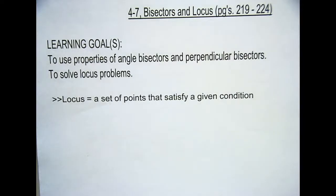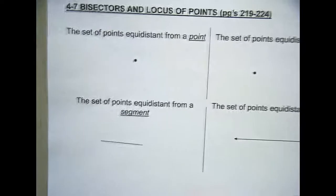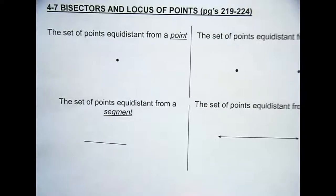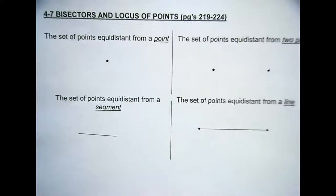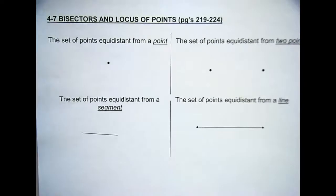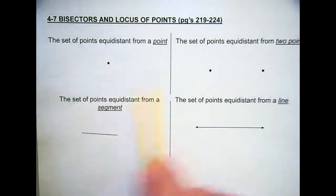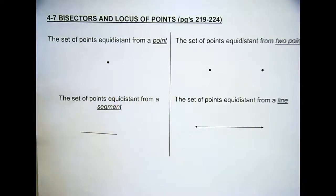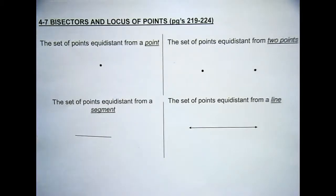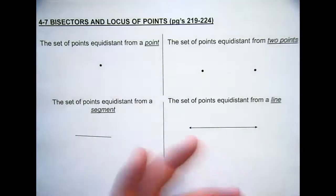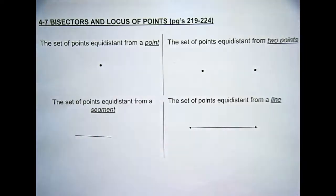Here's what we're going to do. You guys have your note page. On the front of your note page, it shows a set of points equidistant from a point. We have four different conditions. I want you to tell your neighbor what a set of points equidistant from a given point would look like, picture-wise.